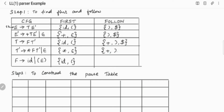For FOLLOW of T dash, we look at where T dash appears. T dash appears at the end of T tends to F T dash. So FOLLOW(T dash) equals FOLLOW(T), which is plus, close brackets, and dollar. For FOLLOW of F, F appears in the production T tends to F T dash. After F comes T dash, so we take FIRST(T dash) which is star. Since T dash can derive epsilon, we also include FOLLOW(T). So FOLLOW(F) is star, plus, close brackets, and dollar.